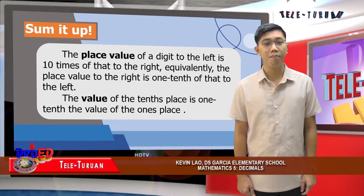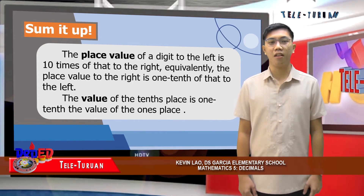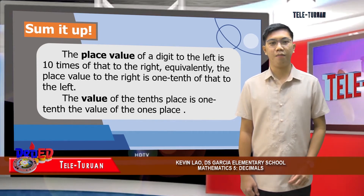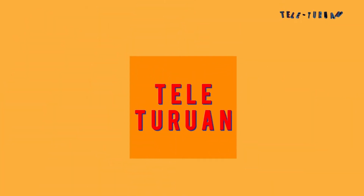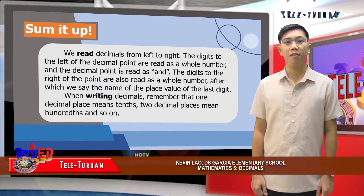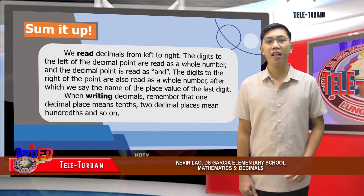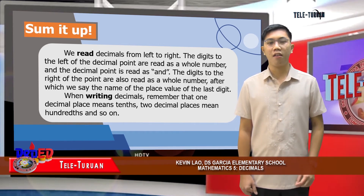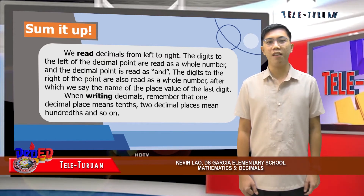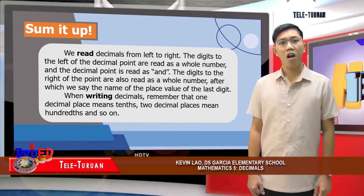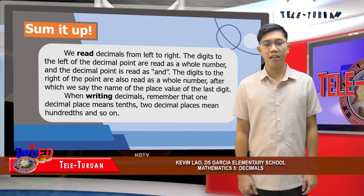To sum it up: the place value of a digit to the left is ten times that to the right. Equivalently, the place value to the right is one-tenth of that to the left. The value of the tenths place is one-tenth the value of the ones place. Also, we read decimals from left to right. The digits to the left of the decimal point are read as a whole number, and the decimal point is read as 'and.' The digits to the right are also read as a whole number, after which we say the name of the place value of the last digit. When writing decimals, remember that one decimal place means tenths, two decimal places mean hundredths, and so on.